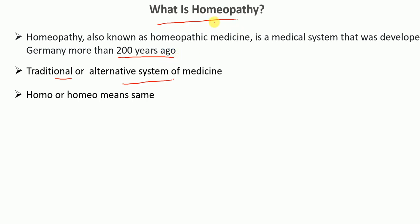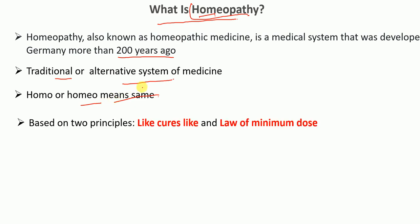Looking at the word 'homeopathy,' the prefix 'homeo' means 'same.' Homeopathy is based on two principles: 'like cures like' and the 'law of minimum dose.' These are the two principles upon which the homeopathic system of medicine is based.